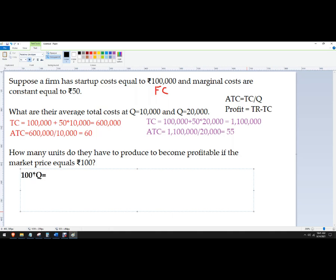And then the total cost is going to be ₹100,000 plus our ₹50 per unit cost, or marginal cost, times Q.